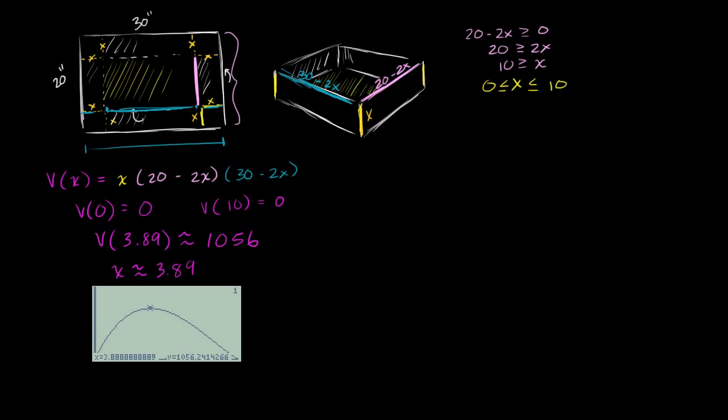In the last video, we were able to get a pretty good sense about how large of an x we should cut out of each corner in order to maximize our volume. And we did this graphically. What I want to do in this video is use some of our calculus tools to see if we can come up with the same or maybe even a better result.